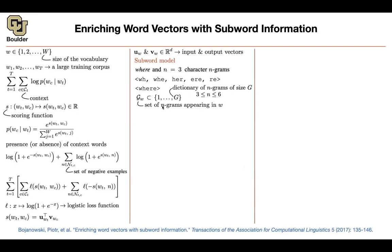We include the subwords to increase the size of our vocabulary. The lower bound and upper bound on n — going from three-grams up to six-grams — are hyperparameters. The paper studies which combination is best. These are the ablation studies you need to do whenever you write a good paper.